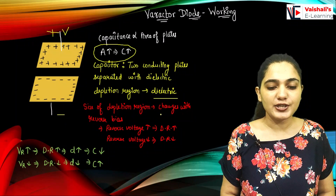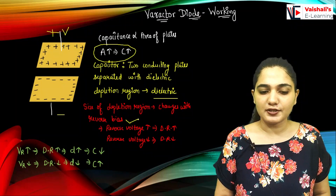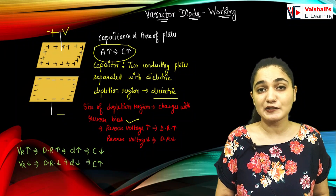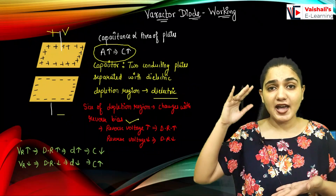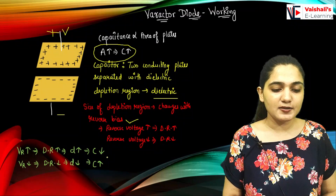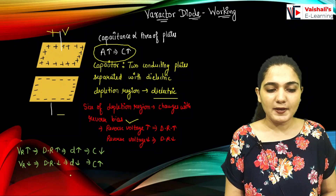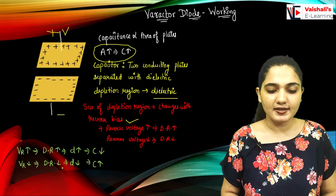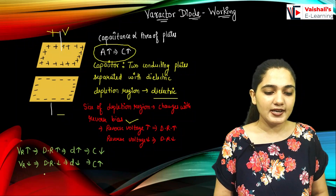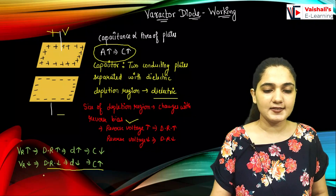The size of the depletion region changes with the reverse bias. When I change the size of the depletion region, the capacitance increases or decreases based on that size. If I increase the reverse voltage, the depletion region length increases, meaning D in the formula (ε·A/D) increases, so capacitance decreases. If I decrease the reverse bias voltage, the depletion region decreases, D decreases, and capacitance increases. This is how the varactor diode functions as a variable capacitor.